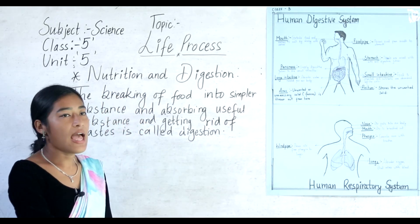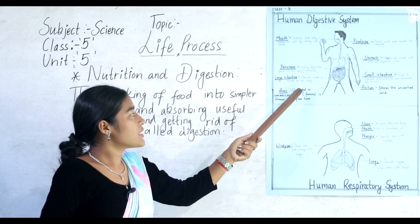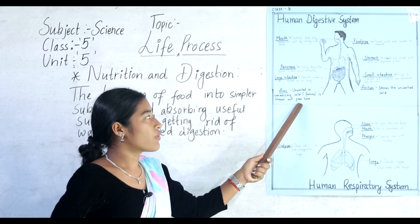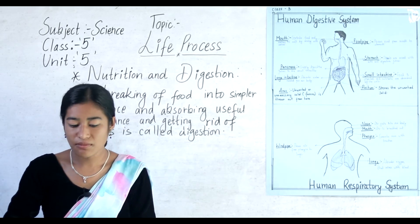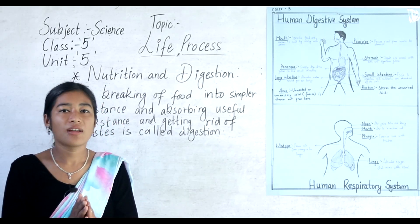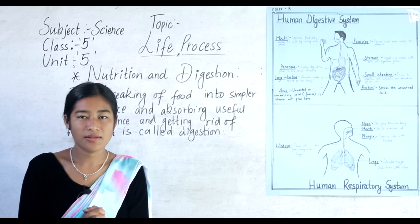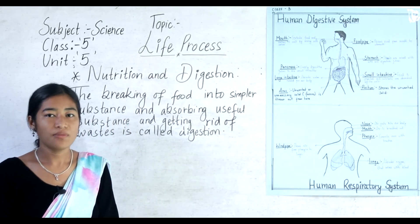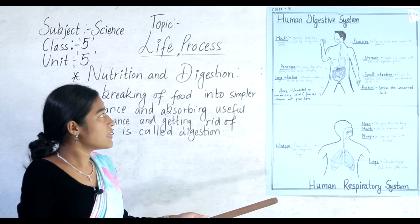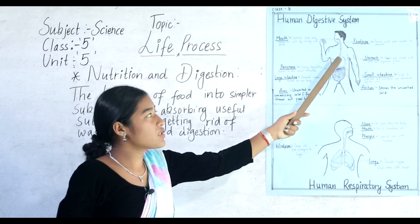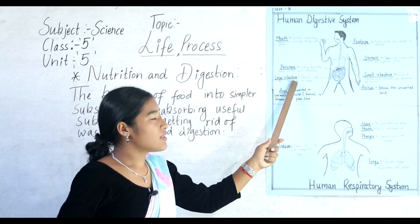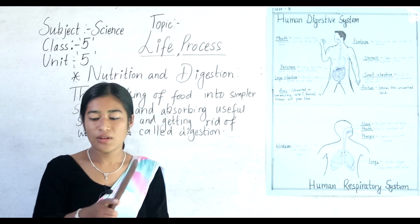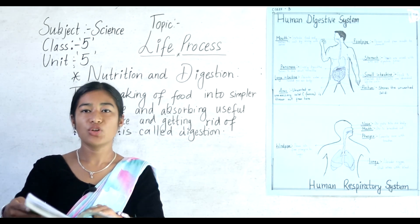The last part is the anus. At the anus, unnecessary solid waste — feces or stool — is thrown out from the body. So the parts of the human digestive system are: mouth, food pipe, stomach, pancreas, small intestine, large intestine, rectum, and anus.